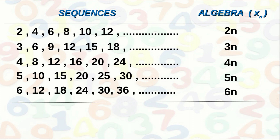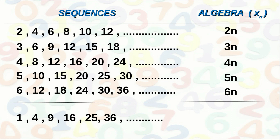Now consider a different sequence: 1, 4, 9, 16, 25, 36, etc. The 1st term is 1, 2nd term is 4, 3rd term is 9, 4th term is 16, 5th term is 25, 6th term is 36. The 1st term is the square of 1, the 2nd term is the square of 2, the 3rd term is the square of 3, the 4th term is the square of 4, and so on. Therefore the nth term is the square of n, that is n².